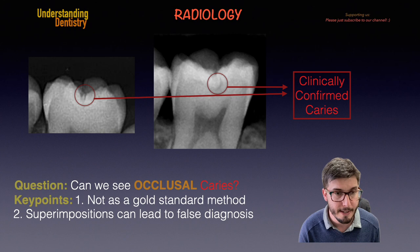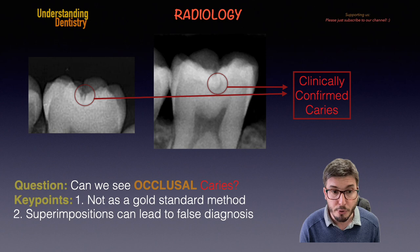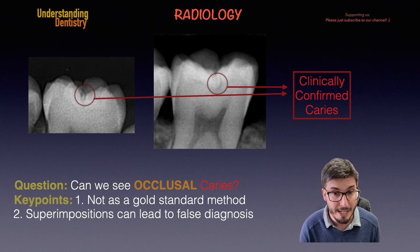However, we cannot forget about another key point, which is key point number two: superimpositions can lead to false positive caries diagnosis. So we need to consider this and correlate with the clinical examination — that's the reason why.